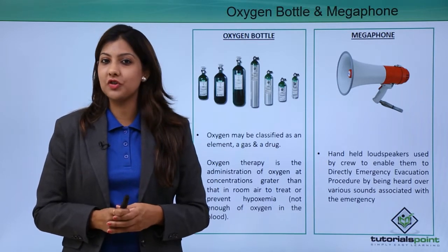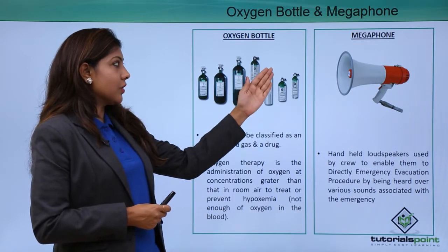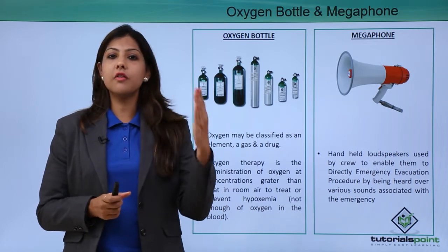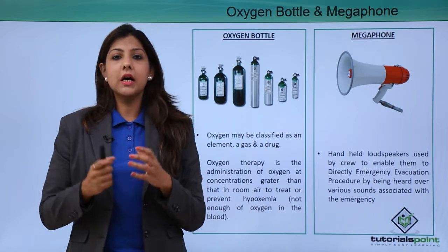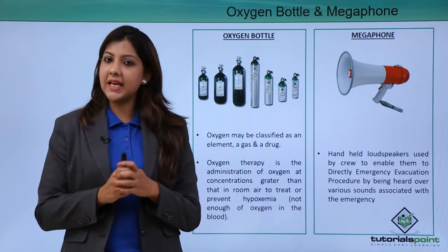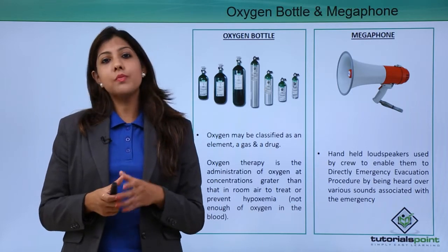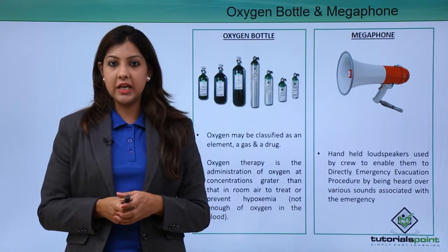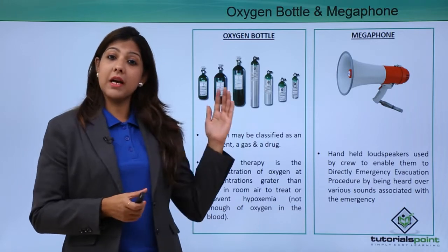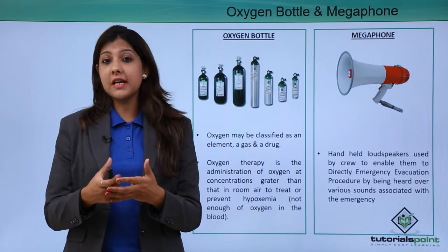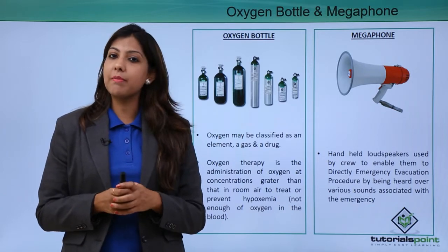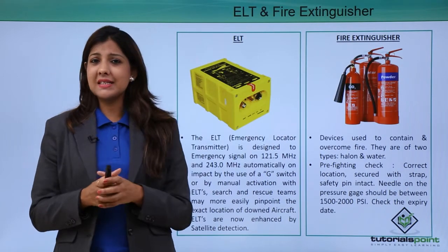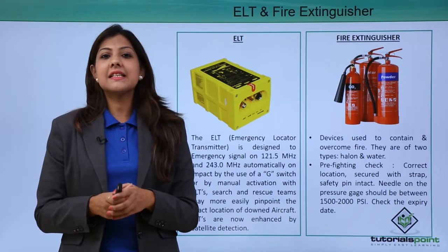The megaphone is located inside the cabin — one in the forward area and one in the aft. The megaphone is typically used by cabin crew for crowd control and to make announcements when there is a power failure and the intercom is not working, ensuring that passengers are able to hear the crew's instructions loud and clear.